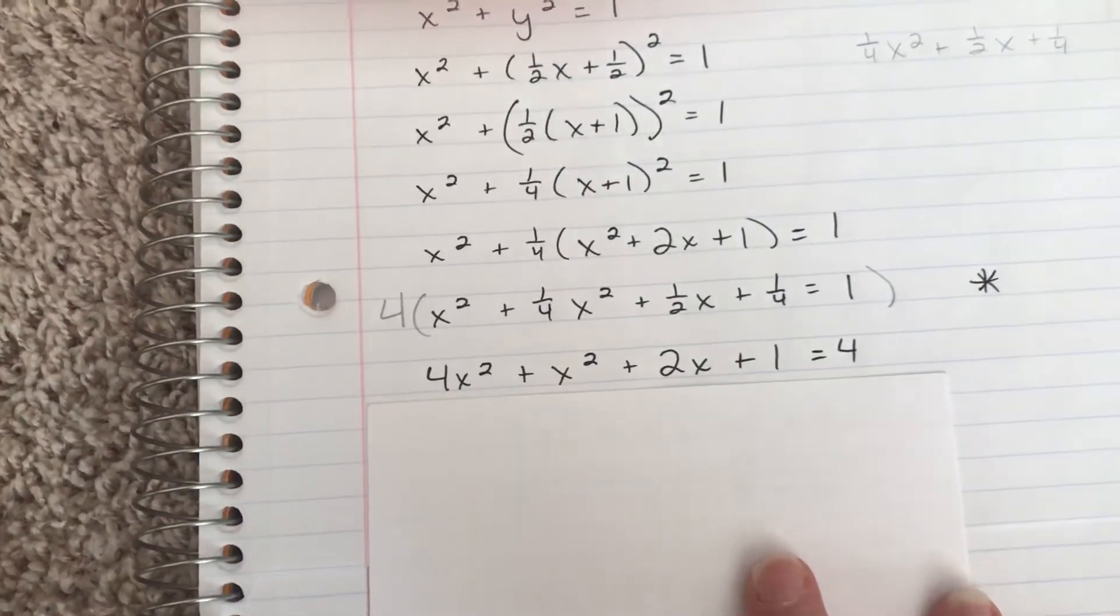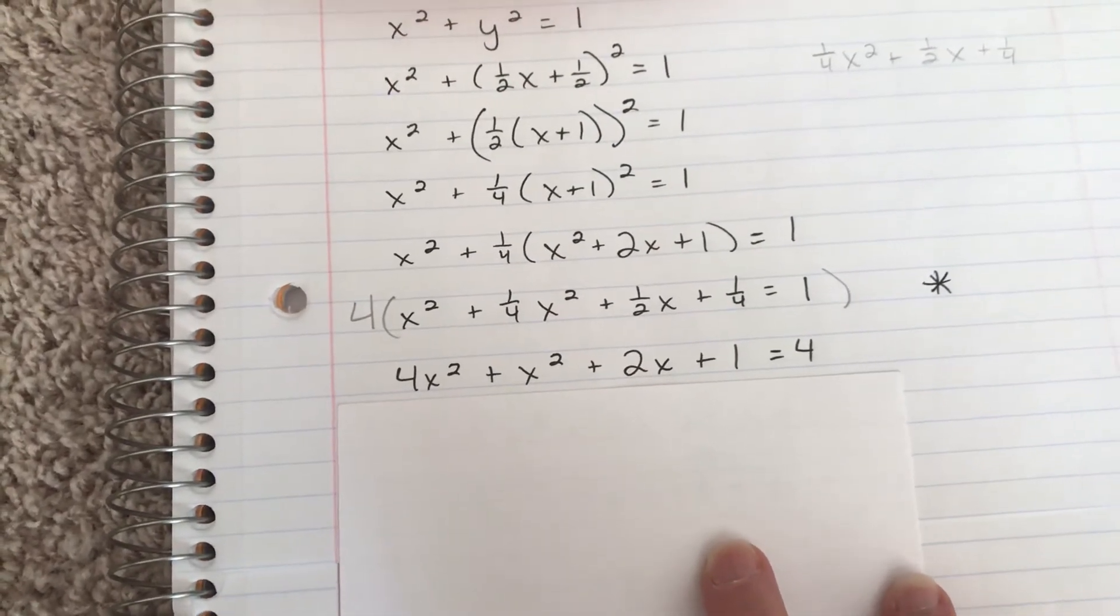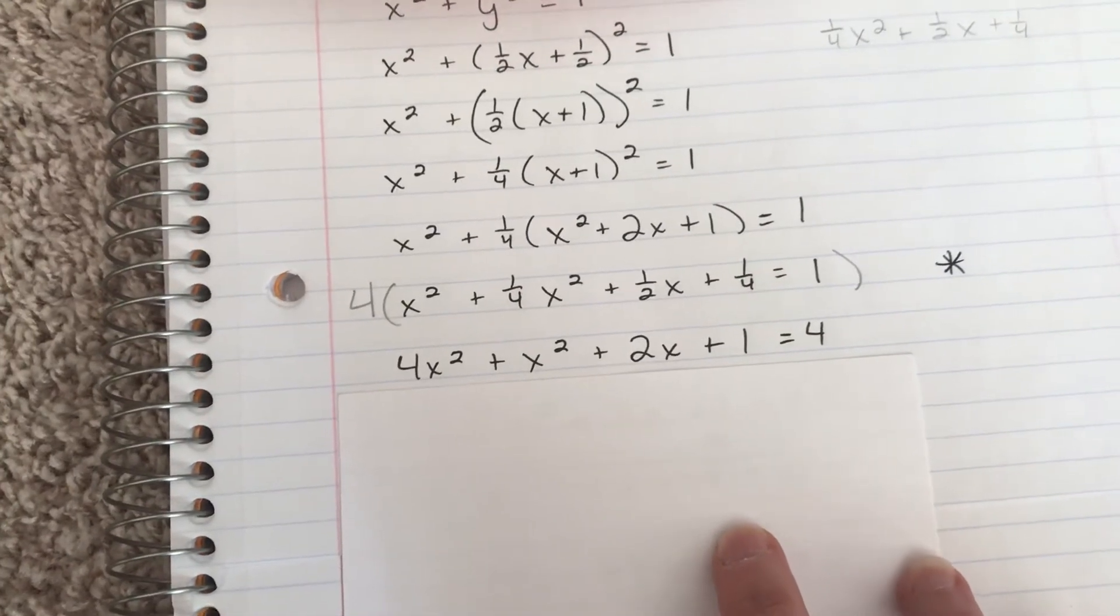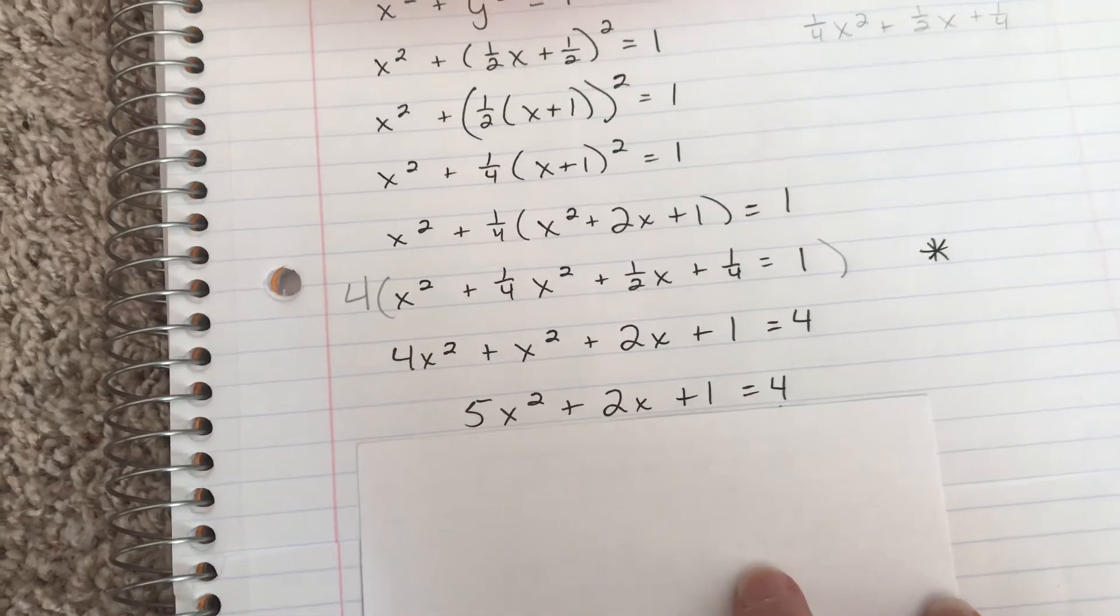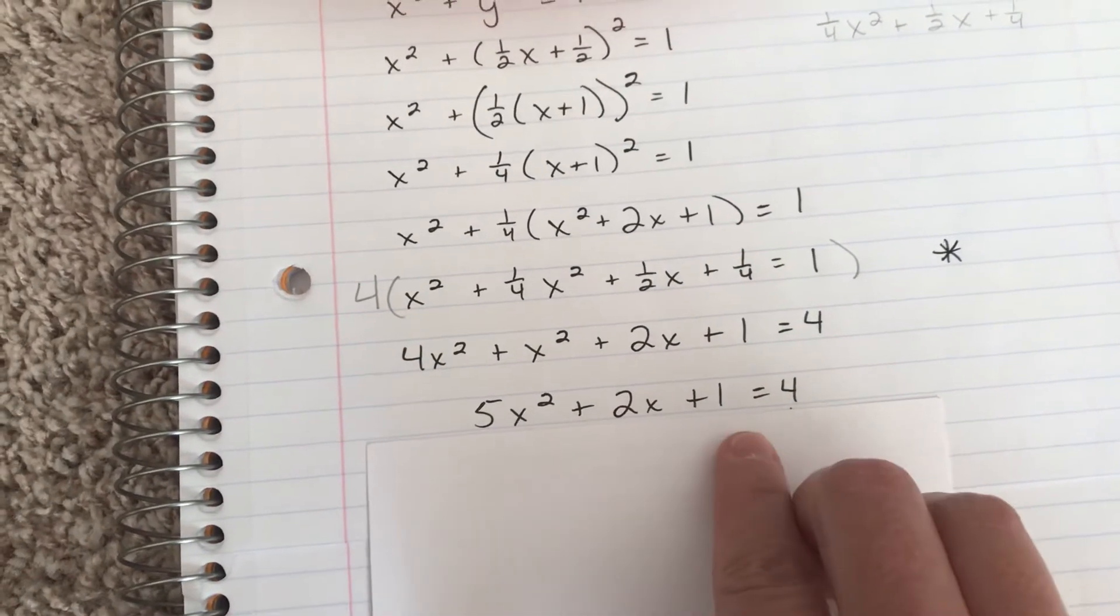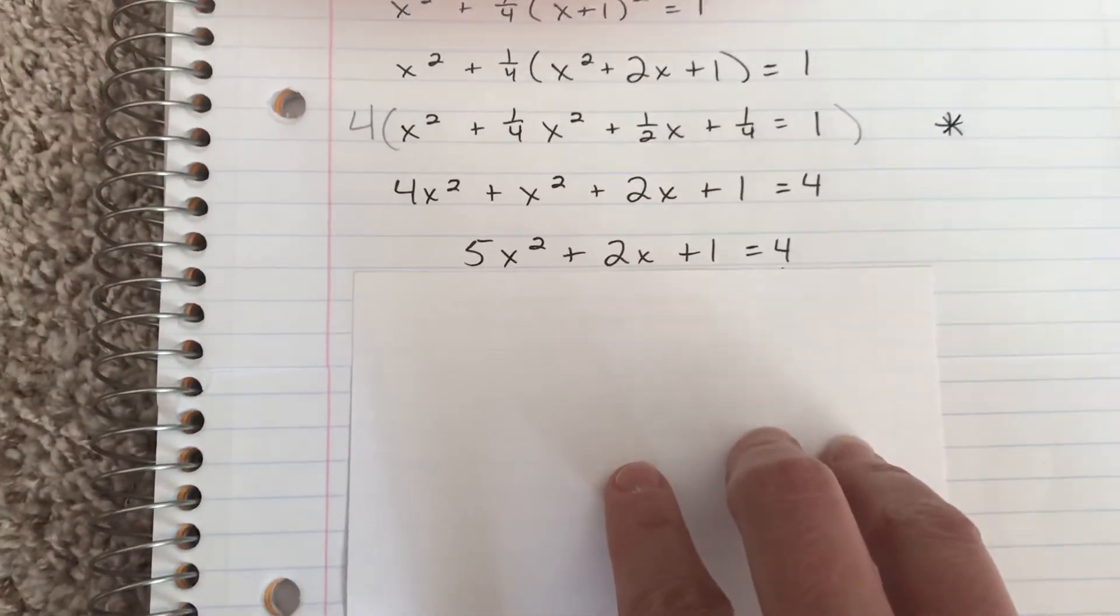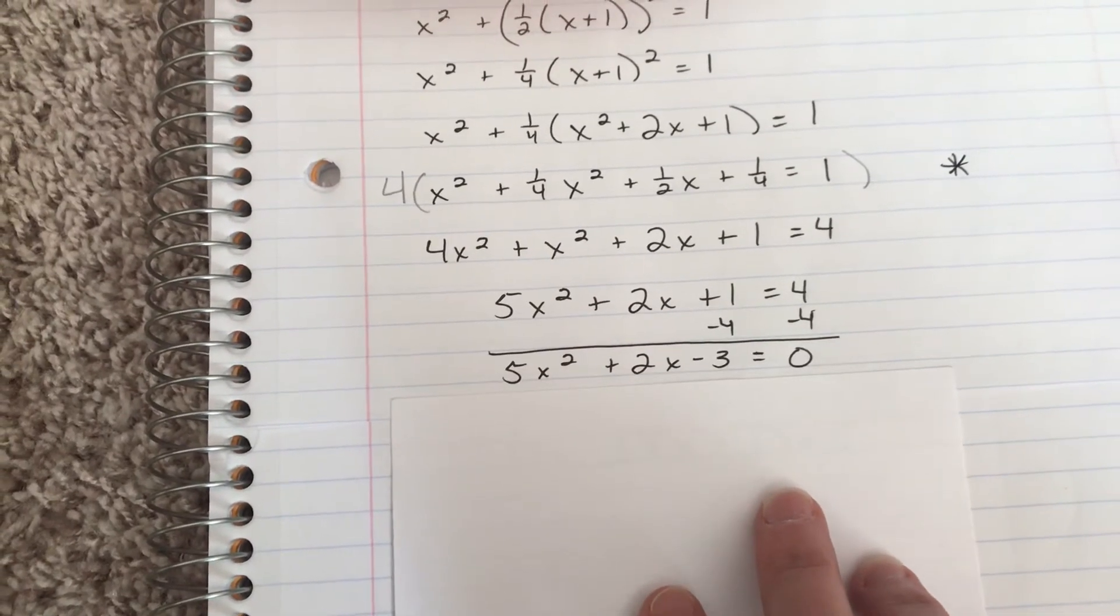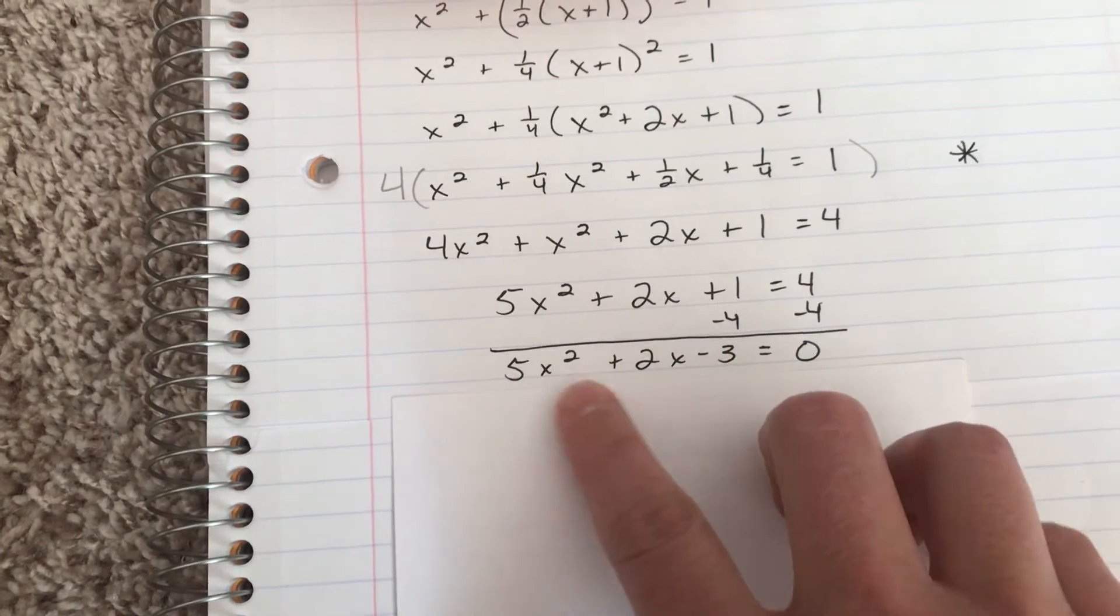Once we do that, now we have nice little integer coefficients, which I like a little bit better because I make less mistakes. Cleaning that up, we've got some like terms: 4x² plus x² will give us 5x². And then I have a quadratic that I need to solve. Before I can solve a quadratic, I need to set it equal to zero, so I'm going to subtract 4 from both sides.